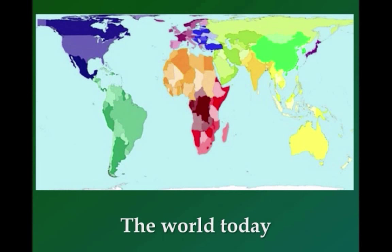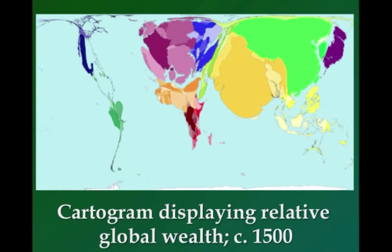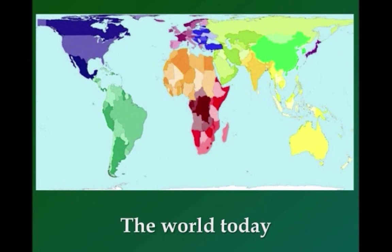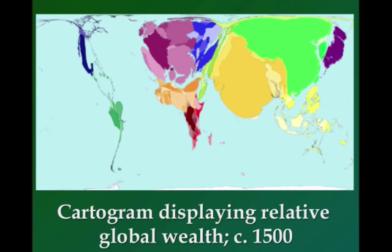In this first map, you see the world as it is today. Now the second is a thematic map called a cartogram — a cartogram is where a specific variable is substituted for land area. In this instance, it's measuring relative wealth in 1500, so we can go back in time to see where it was in 1500 according to wealth.